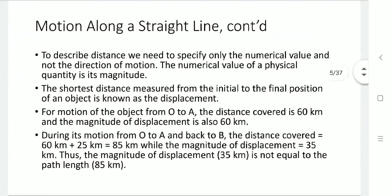Now we want to describe distance. Distance is basically a numerical value, and that can be known as a magnitude. The shortest distance from the initial point to the final point is known as displacement.